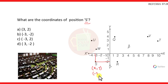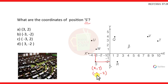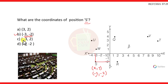The Y coordinate is the distance from the X axis. That distance is minus 2. So the coordinates of position S are (-3, -2). Therefore option B is the correct option: (-3, -2).